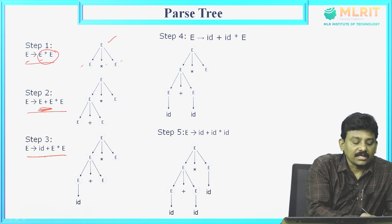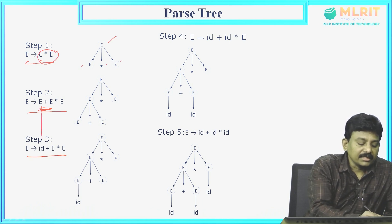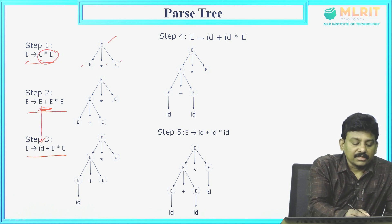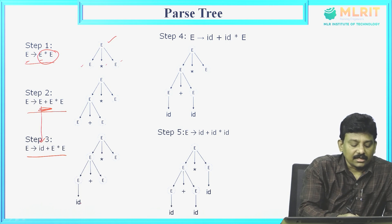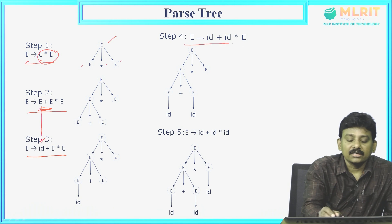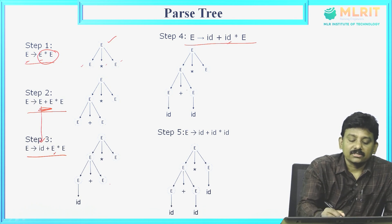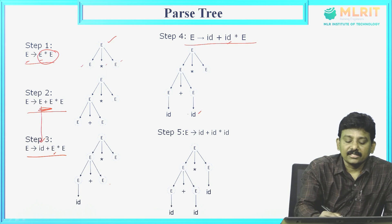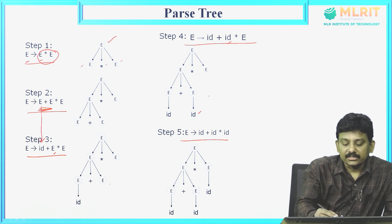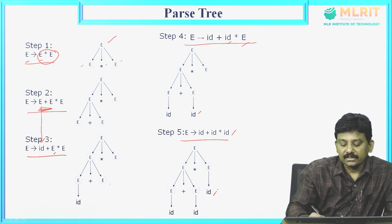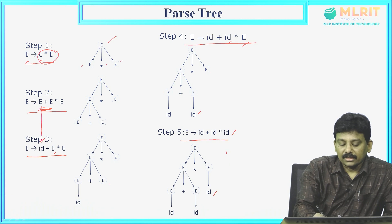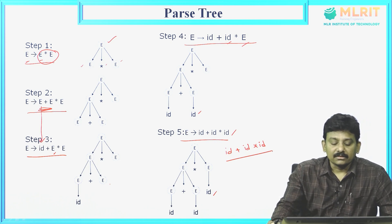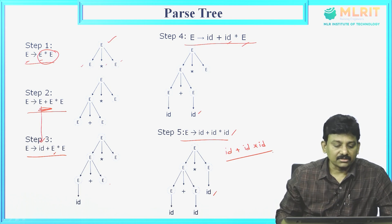In the next step, E derives id plus E star E — this E is replaced by id. The extension of this parse tree is this E deriving id: id plus E star E. In the next step, E derives id plus id star E. Finally, E derives id plus id star id — this E is replaced by id. If you collect all the leaves of the tree, you can get id plus id star id. This is the string derived using the parse tree. Parse tree is a graphical representation of the derivation.